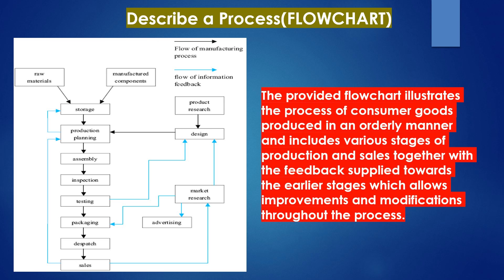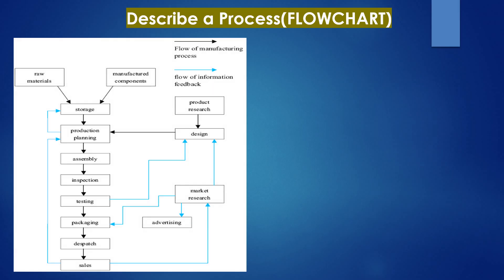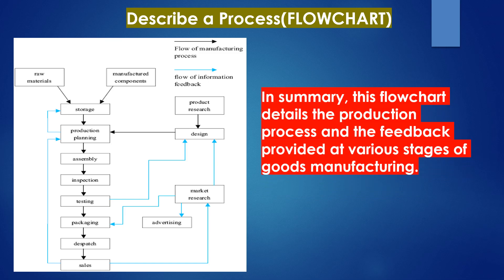The provided flow chart illustrates the process of consumer goods production in an orderly manner and includes various stages of production and sales together with the feedback supplied towards the earlier stages, which allows improvement and modifications throughout the process. In summary, this flow chart details the production process and the feedback provided at various stages of goods manufacturing.